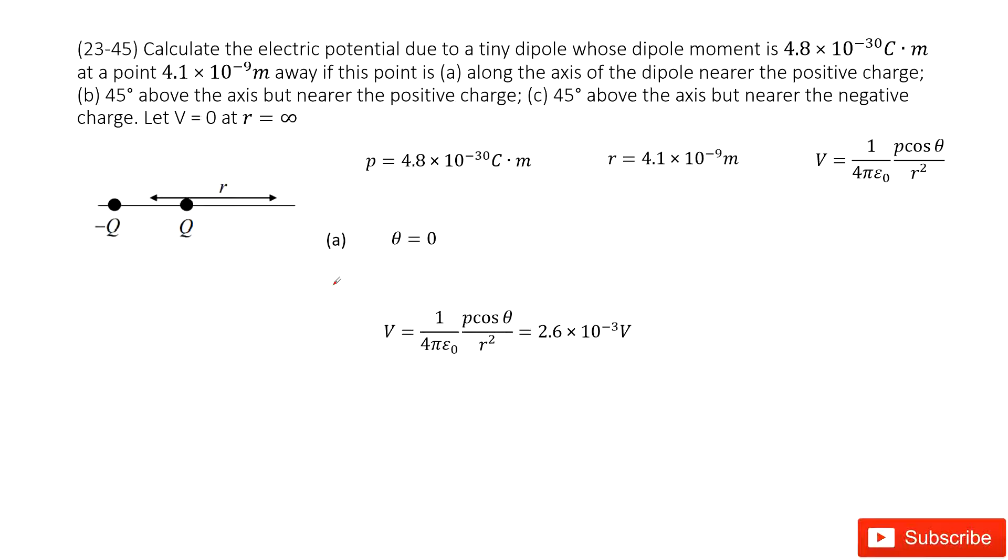We need to calculate the electric potential due to a dipole. The dipole momentum P is given and the distance from the dipole to the point is given R.